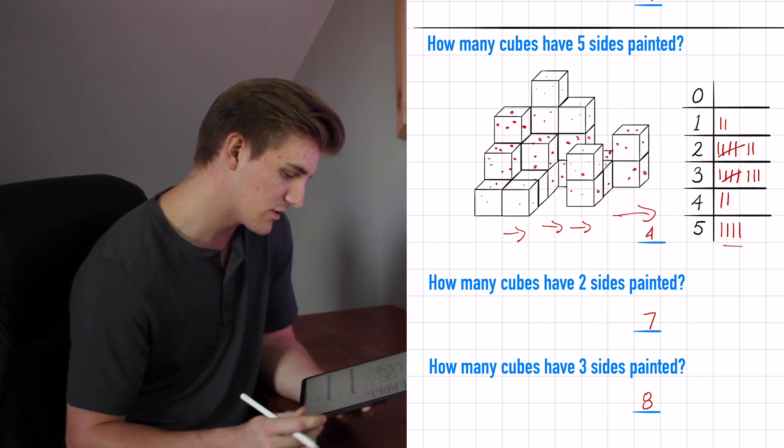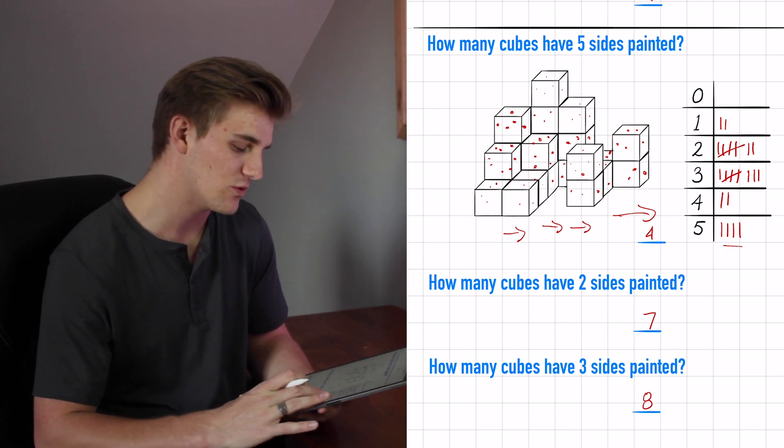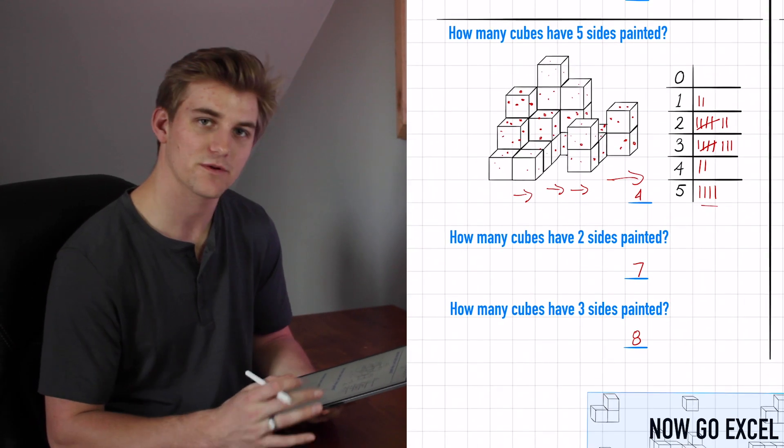Now answering the questions for example two. How many cubes have five sides painted? The table shows four tick marks — answer is four. How many have two sides painted? Table says seven — answer is seven. How many cubes have three sides painted? Table shows eight — answer is eight. That is our second high-level example.